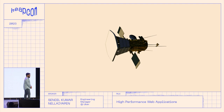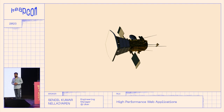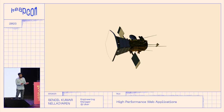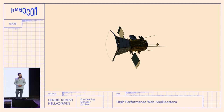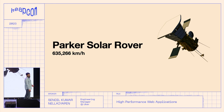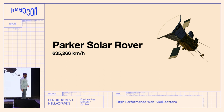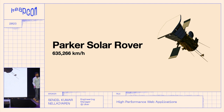Anybody know what this picture is? Has anybody seen this? It's a module — yes, it's a module. So this is actually the fastest man-made moving object ever made. It's called a Sparker solar rover and it travels at the speed of around 635 kilometers per hour. That's a fast thing, and my talk is about performance.